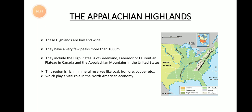The Appalachian Highlands cover three countries in North America. In Greenland they are called the high plateaus. In Canada they are named the Laurentian or Labrador Plateau. And in the United States they are named the Appalachian Mountains. You can see the Appalachian Mountains labeled in the map.